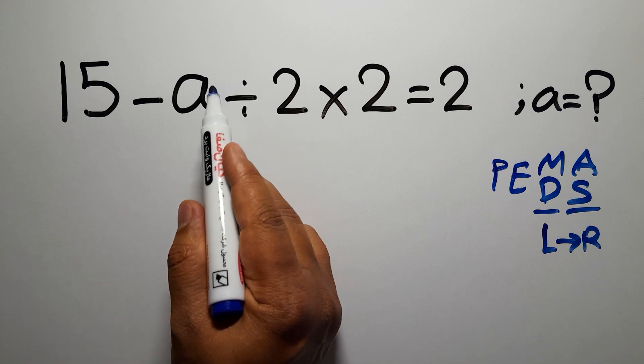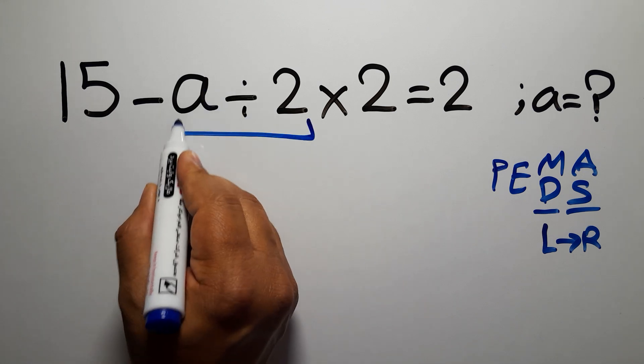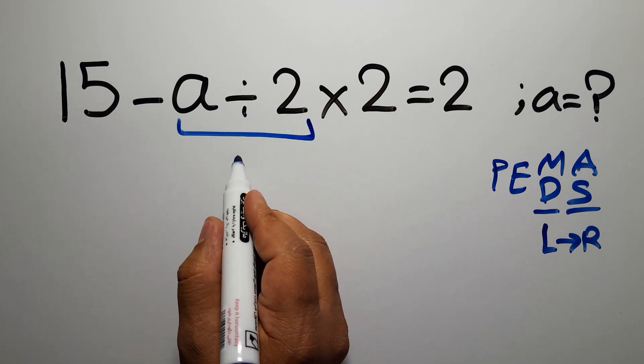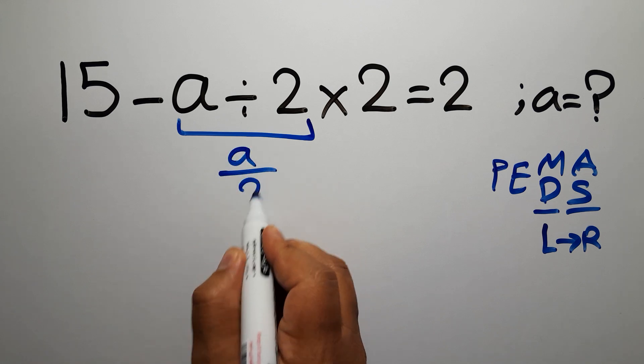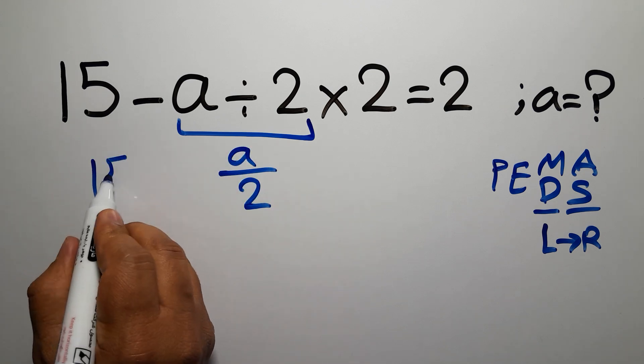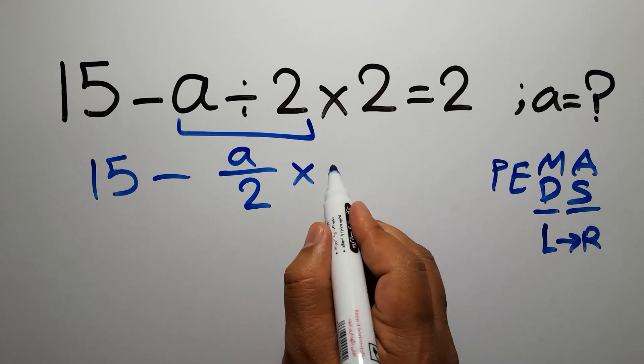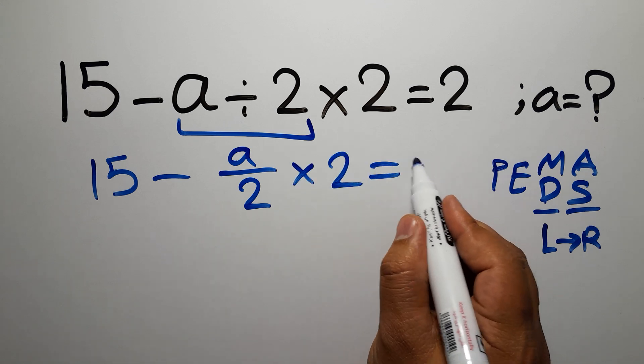So first we have to do this division. a divided by 2 can be written as a over 2. So we have 15 minus a over 2 times 2 equals 2.